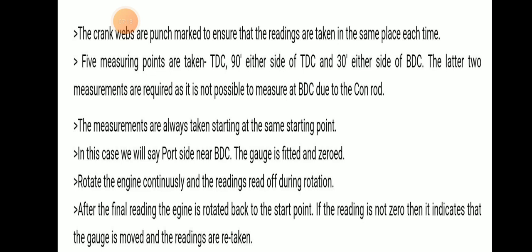The measurements are always taken starting at the same point — in this case, the port side near BDC. The gauge is fitted and zeroed. The engine is rotated continuously and readings are read off during rotation. After the final reading, the engine is rotated back to the start point. If the reading is not zero, it indicates that the gauge has moved and readings need to be retaken.